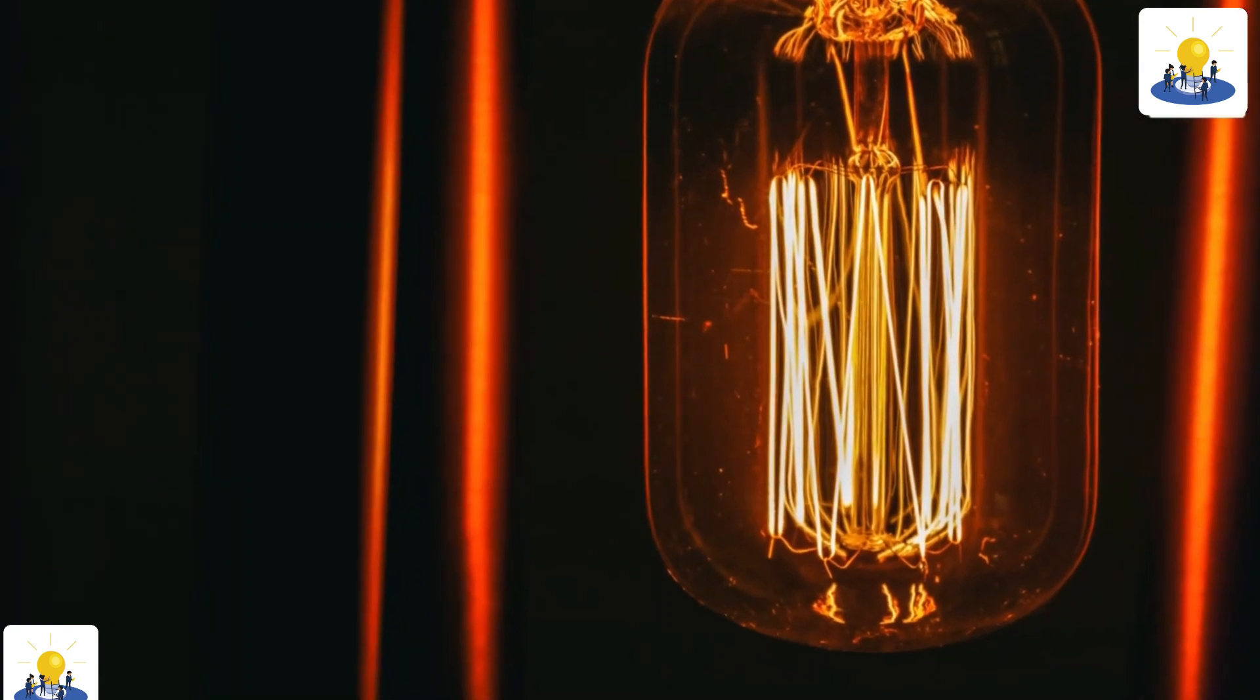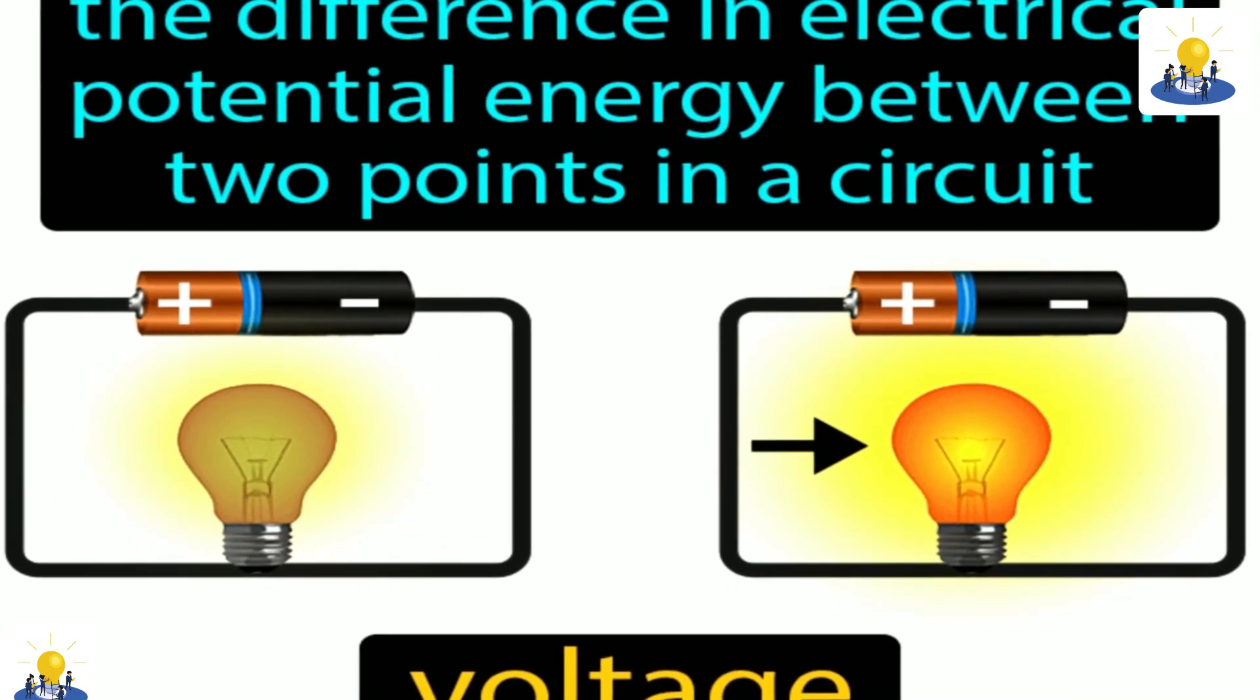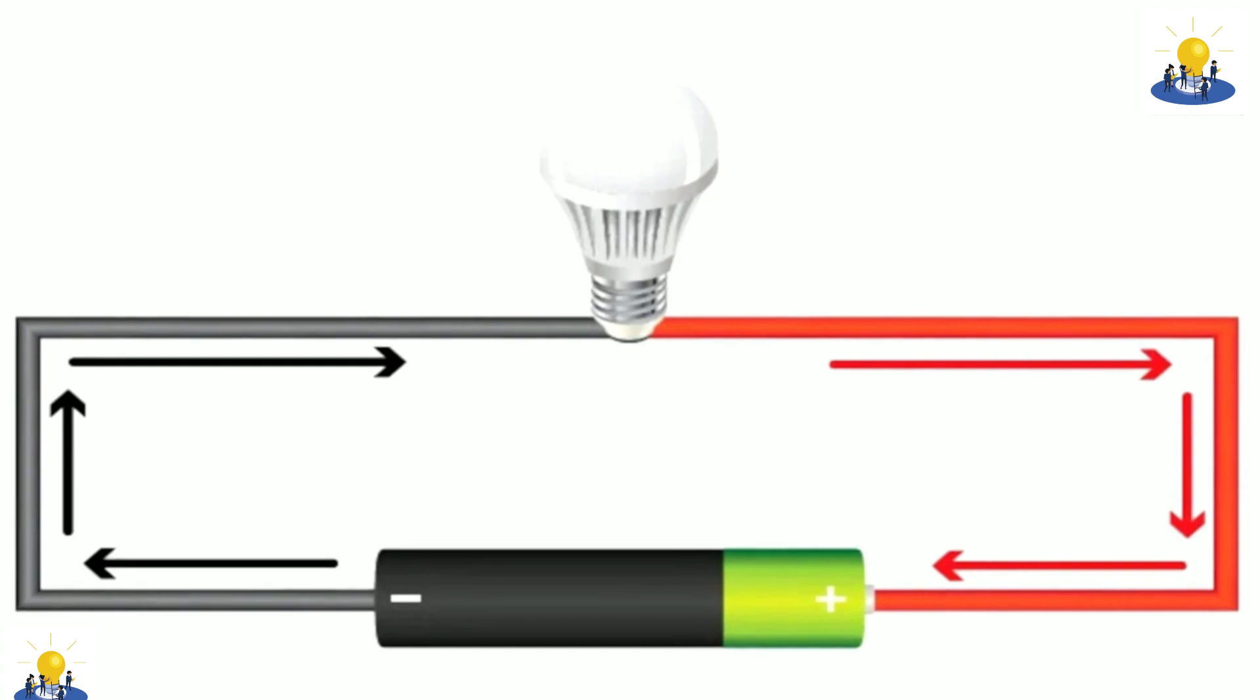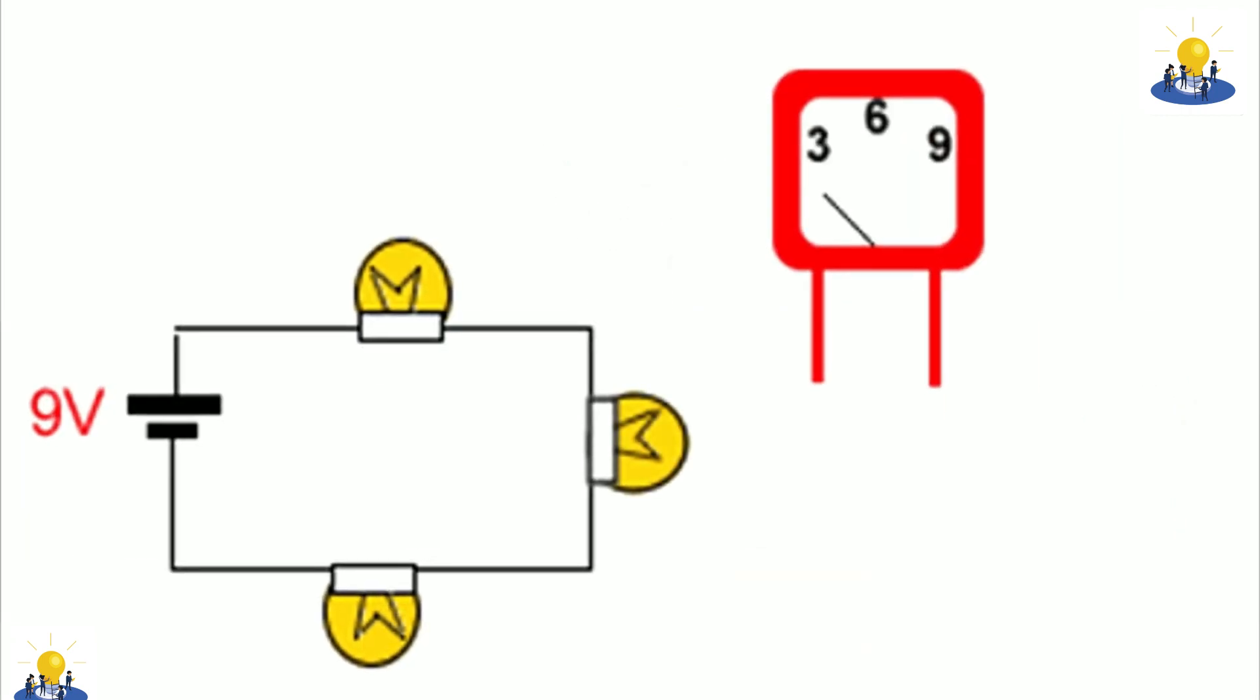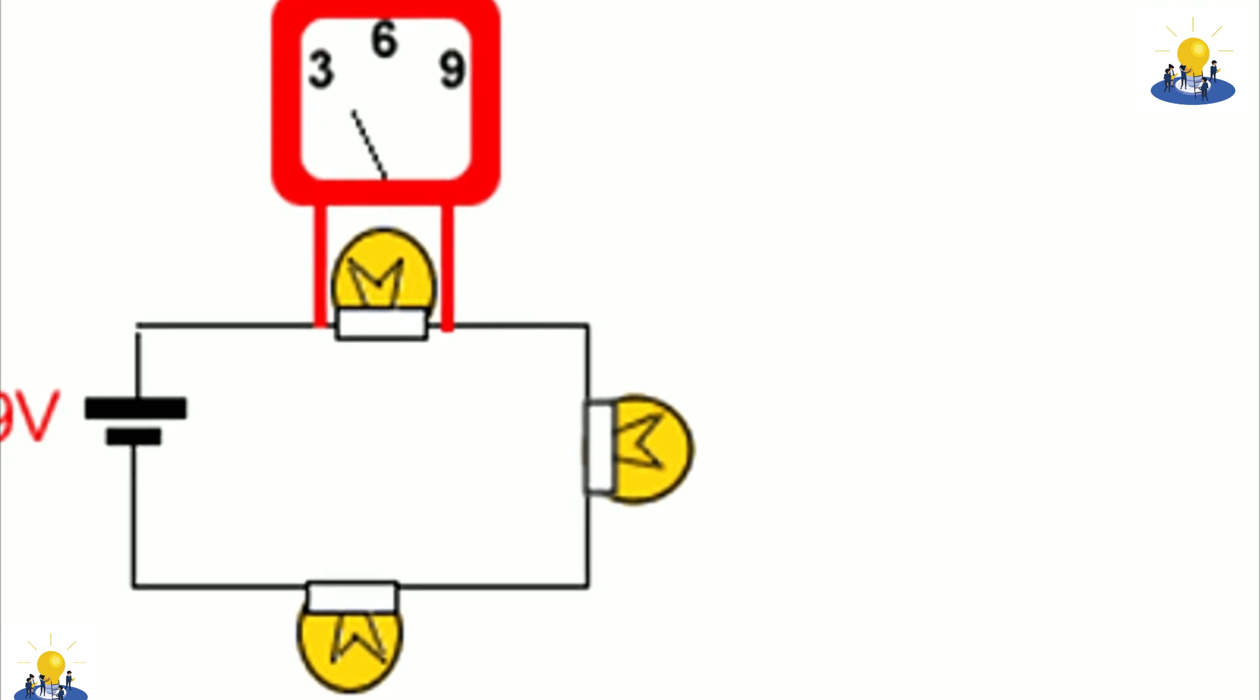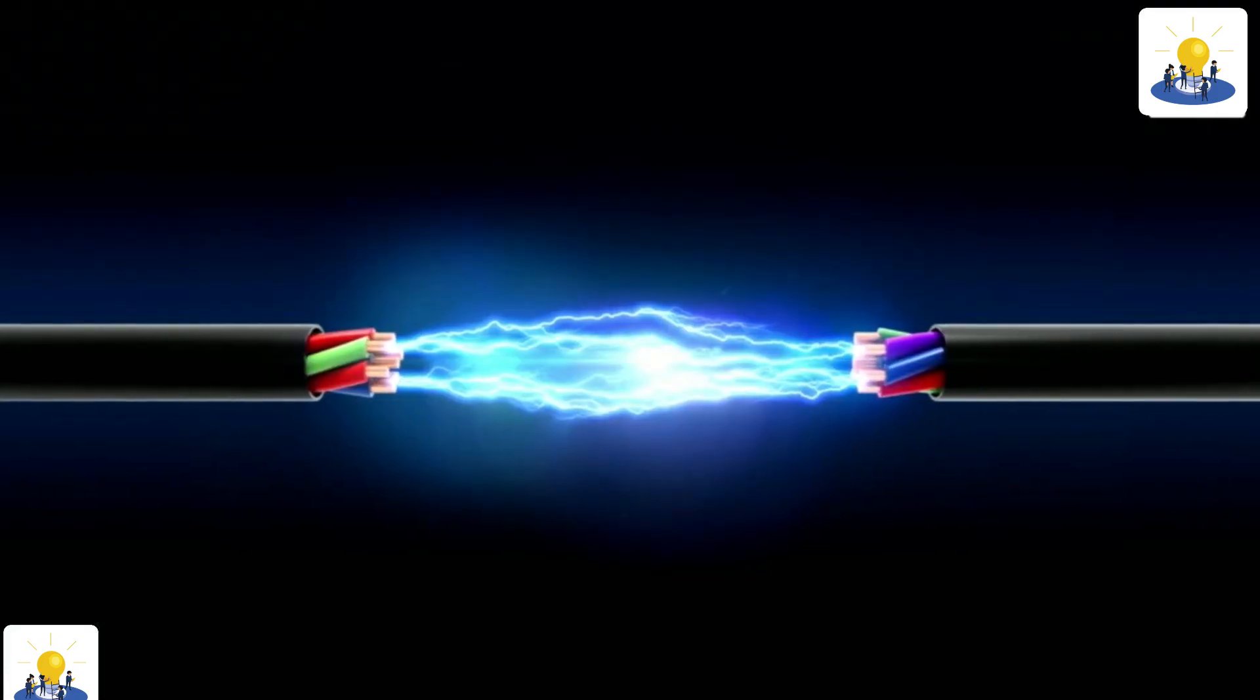Whenever there's a difference in charge between two locations, there's a possibility that a current will flow if those locations are connected by a conductor. Because of this possibility, the term potential is often used to describe voltage. Without voltage, there can be no current. Thus, voltage creates the potential for a current to flow.